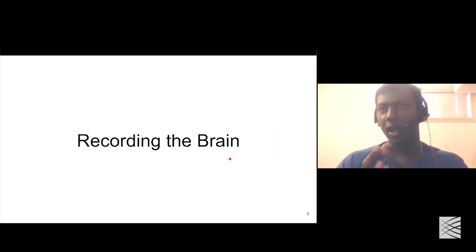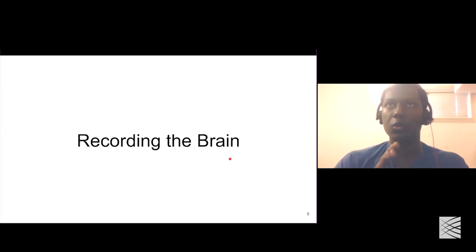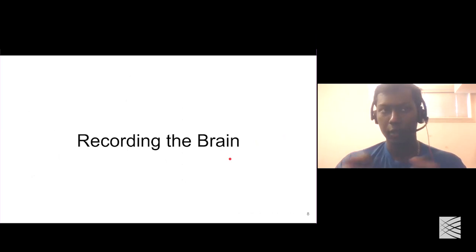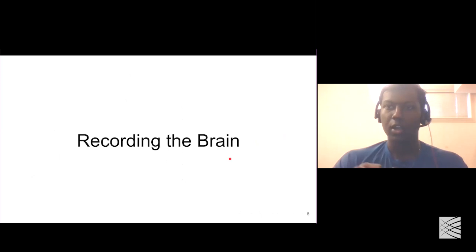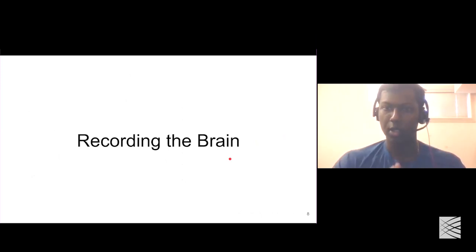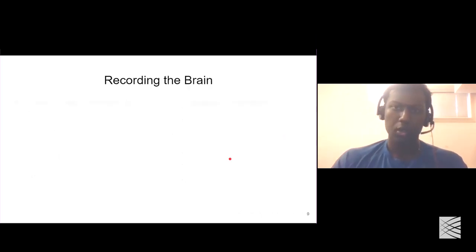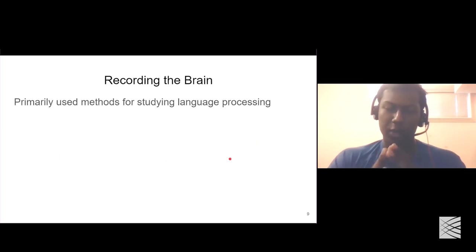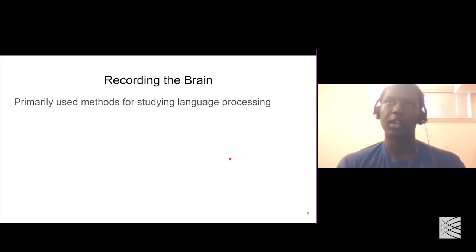So now we have an understanding of why we need to transform text into a numerical representation and the motivation for that. Let's look at how we can record the brain and try to understand what the brain is doing given a certain task — specifically for language processing.